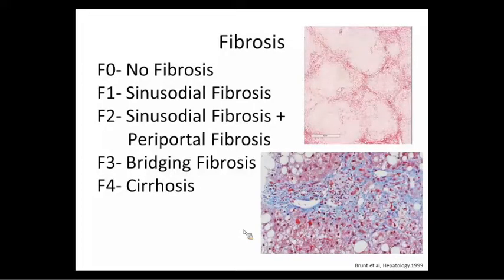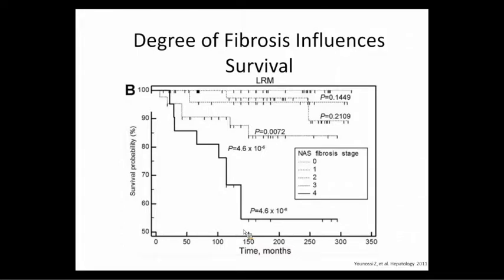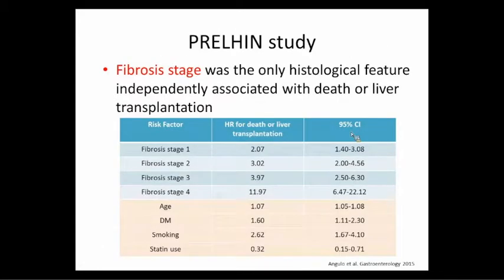Let me explain why we care about fibrosis. The fibrosis pattern in NASH is a little different than in Hep C. It starts with F0 (no fibrosis), F1 (sinusoidal or pericellular 'chicken wire' fibrosis), F2 (periportal plus sinusoidal), F3 (bridging), and F4 (cirrhosis). A key study by Angulo et al. looked at liver-related mortality over time based on fibrosis stage — cirrhotics do poorly and die, F3 also does poorly. This is the best longitudinal study we have, with about 700 patients from North America, Asia, and South America. They looked at all histological features and medical problems, and the only thing that really came out as a mortality predictor was fibrosis staging.